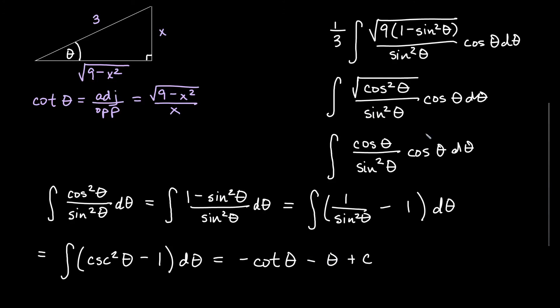If I want to know what theta is, remember our original substitution was that sine of theta is equal to x over 3. That was the original statement that we had. So I could then figure out theta if I say that theta is equal to the inverse sine of x over 3. If we take the inverse sine of both sides.